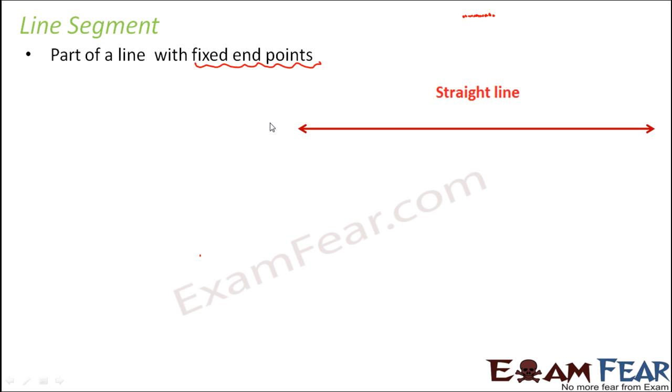But when we talk about the line segment, we talk about only a certain portion of the line with fixed end points. So when you look at AB, AB is a line segment because you have fixed end points A and B. So this AB is a part of the straight line that we see on the screen. So that's a line segment.